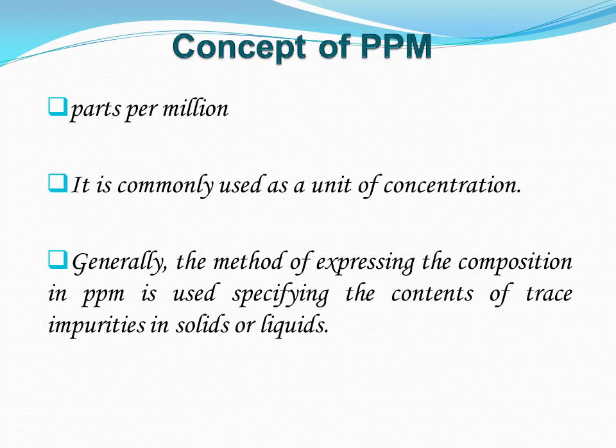Next, we come to the concept of PPM, which is the short form of parts per million — that is, parts of one substance present in million parts of another substance, especially solvent. It is commonly used as a unit of concentration. The method of expressing composition in PPM is used for specifying the contents of trace impurities in solids or liquids.